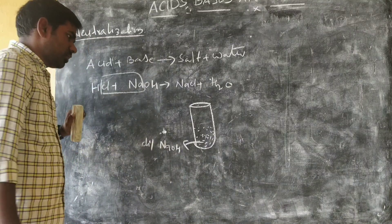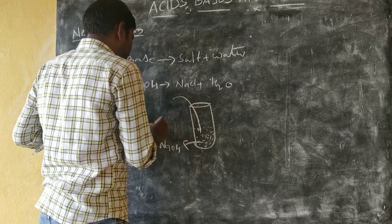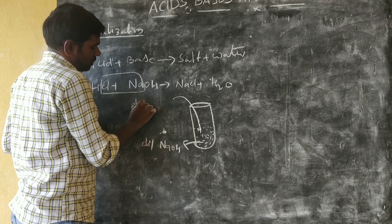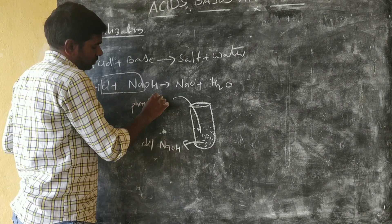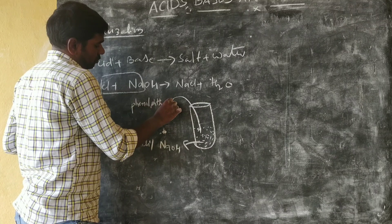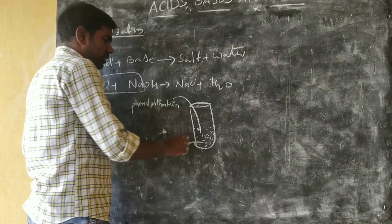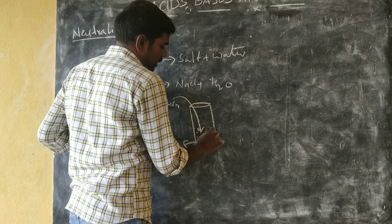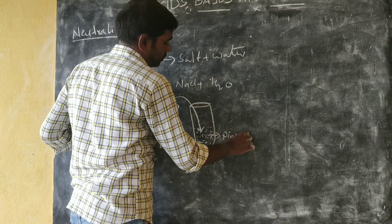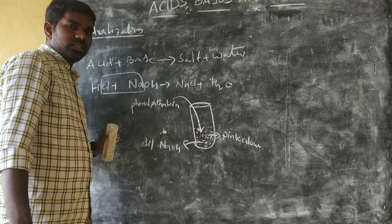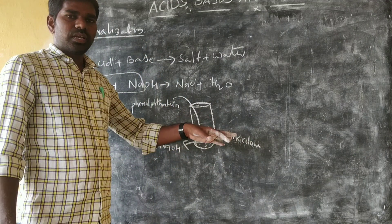Dilute base. So we will add a phenolphthalein indicator, one drop or two drops. Phenolphthalein indicator - we will add a phenolphthalein indicator that will change.